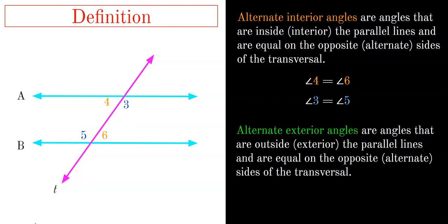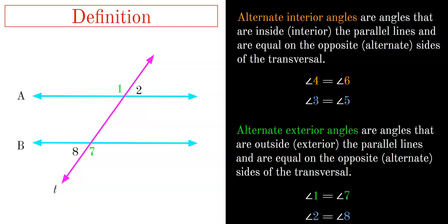The alternate exterior angles definition says that angles outside the parallel lines are equal on opposite sides of the transversal. So diagonally, angle 1 and angle 7 are equal, and angle 8 and angle 2 are equal.